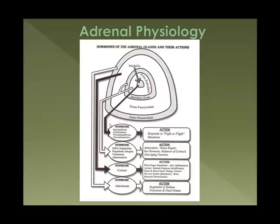Next you'll see the hormone cortisol, and that regulates blood sugar, it's anti-inflammatory, and it can modify your immune functions, generally toning them down. It can change the tone of the blood vessels, the central nervous system can be stimulated by cortisol, and it's created in reaction to stress. The last one is aldosterone, which regulates your electrolytes. When you start having aberrant aldosterone production, you can run into muscle cramping issues and heart palpitations.